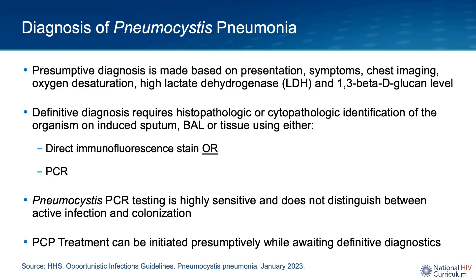For a definitive microbiologic diagnosis, you need to identify the organism on respiratory specimens, including induced sputum, bronchoalveolar lavage (BAL), or lung tissue obtained from a biopsy — either by a direct immunofluorescent stain or by PCR. The PCP-PCR test is extremely sensitive but does not distinguish adequately between active infection and colonization, so a positive PCR result must be assessed in the larger context of the patient's clinical presentation, labs, and radiographic findings. Since microbiologic diagnosis may take several days, you should initiate PCP treatment presumptively based on clinical manifestations, labs, and radiographic findings.